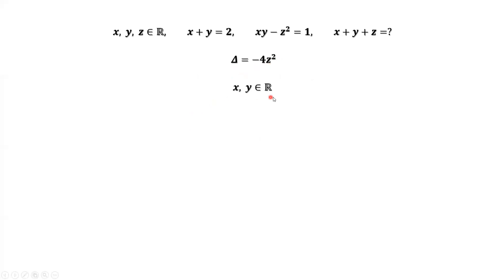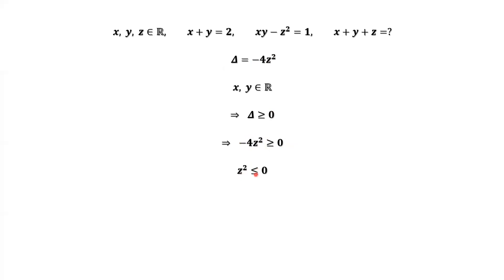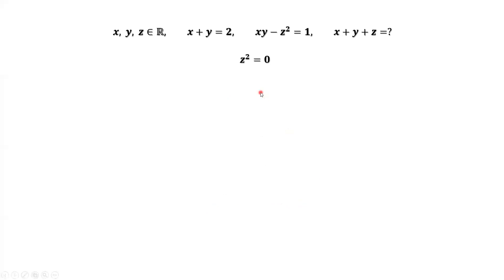Because x and y are real numbers, delta must be greater than or equal to zero. This implies negative 4z squared is greater than or equal to zero, which simplifies to z squared less than or equal to zero. However, z squared must be greater than or equal to zero because z is a real number. Combining both conditions, we have z squared equals zero.